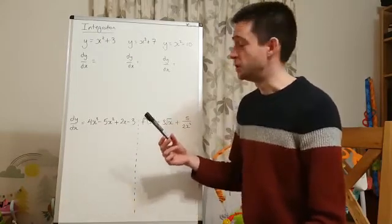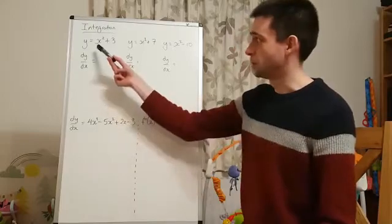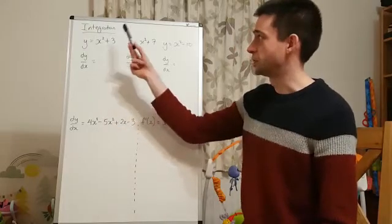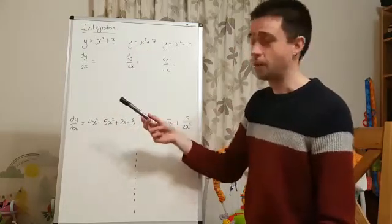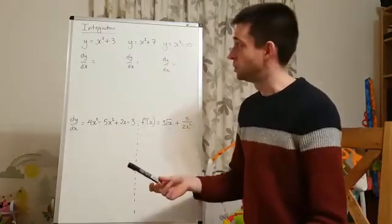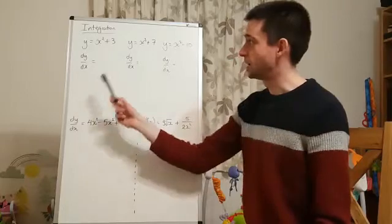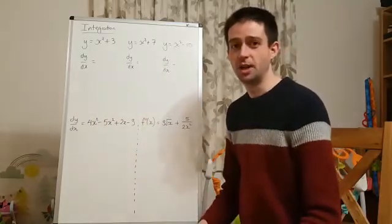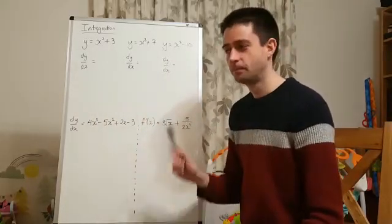So the first thing I want you to do is for each of these equations here, y equals x squared plus 3, y equals x squared plus 7, y equals x squared minus 10, I just want you to very quickly find me dy dx for each of those by differentiating. Pause the video, do that quickly.